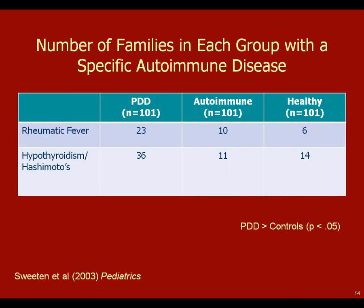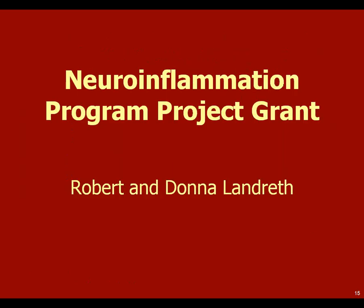In the same study, looking across the three groups, rheumatic-related disorders and hypothyroidism were the autoimmune conditions most prevalent, with significant differences between the PDD group and healthy controls. We've also learned that as a person gets older, the likelihood of an autoimmune disorder increases, so many relatives of the children with PDD likely hadn't yet passed through the age of risk — which informed our next study design.